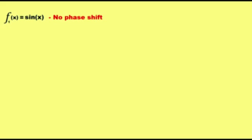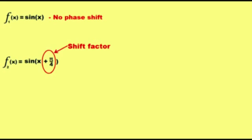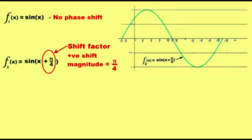Let's look at positive phase shift. This is the ordinary sine function without phase shift, which was shown earlier. And this is the sine function with phase shift. The term plus pi over 4 added to the ordinary sine function is the phase shift factor. The plus sign indicates positive phase shift, and the term pi over 4 is the magnitude of the phase shift. You can see the waveform starts from minus pi over 4 and not from the origin.